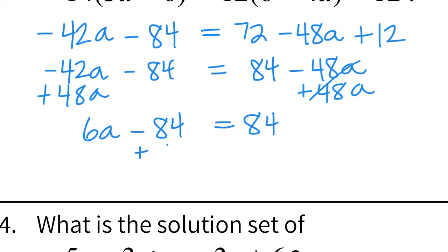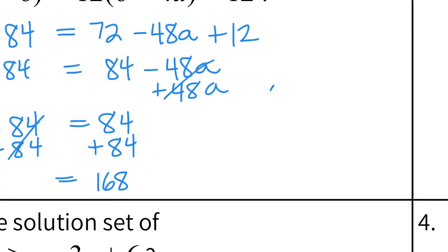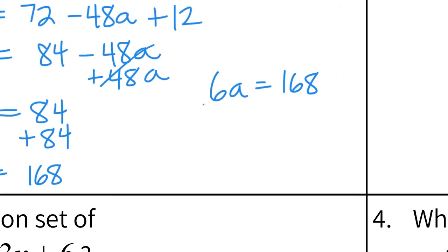Now I'm going to add 84 to both sides. And that cancels. So we're going to get a big number. I have 6a equals 168. I'm running out of room so I'm going to write this to the side over here. We stopped with 6a equals 168. And last step is to divide by 6. And when you do that you should get a equals 28.